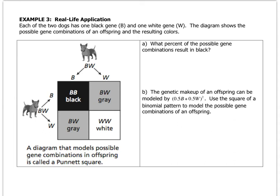It's a way that you can organize the different hair combinations or eye combinations that your children can have. So letter A, what percent of possible gene combinations result in black? So there are four possibilities. How many are black? 25%. You just have to look at the chart and pick the one that's black.